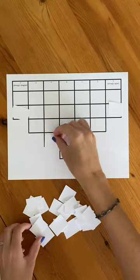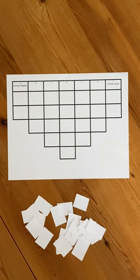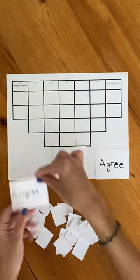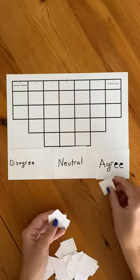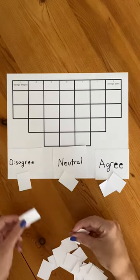It may be difficult to start placing these into such a big grid, so what we recommend is you create three different piles: agree, neutral, and disagree. We recommend you do a quick pre-sort, so you look at each statement and you make a quick gut decision about how you feel about it.